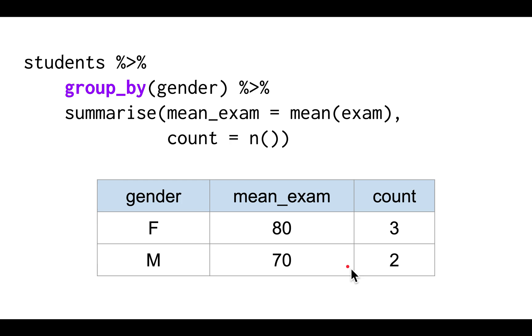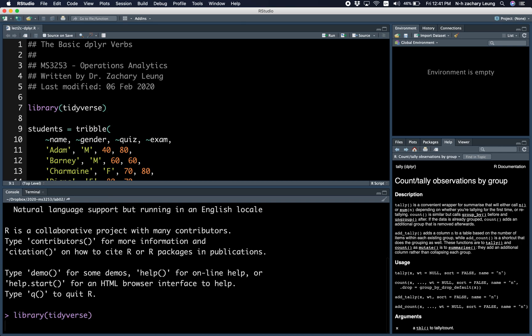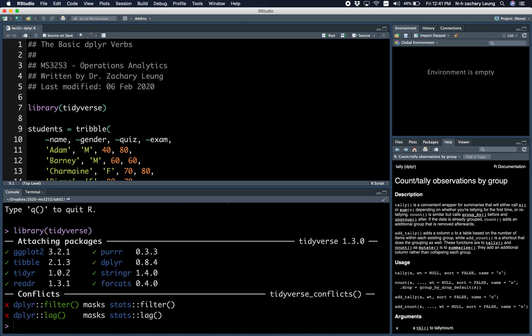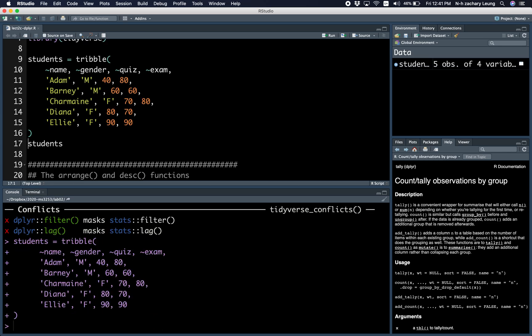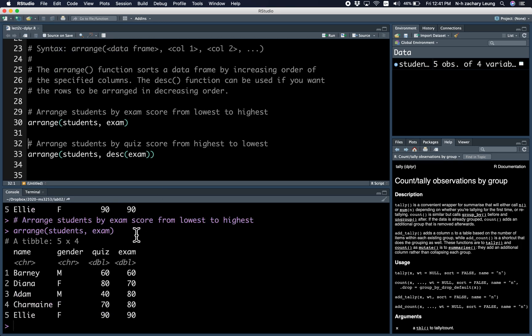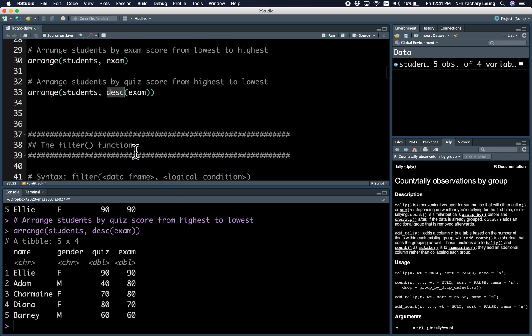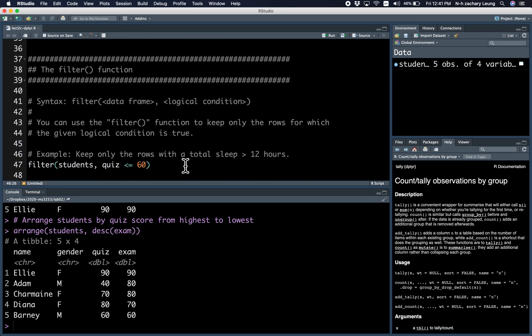Alright, let's go to the coding demo and see how that works. Of course, you have to load the tidyverse. Notice that the tidyverse loads the dplyr package. Then this is the regular students data frame. This is how you arrange the data frame from increasing order of exam score, in other words lowest to highest. If you want to do it in decreasing order, this is how you do it with the DESC function.